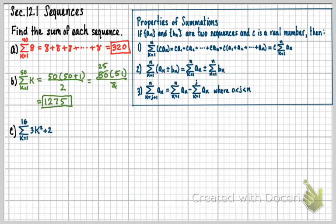So what does that mean for us here? First off, I can say that this equals the summation of k equals 1 to 16 of 3k squared plus the summation k equals 1 to 16 of 2. I'm using this property right here that I can split across addition and subtraction. Here's my addition here, and I can split it.